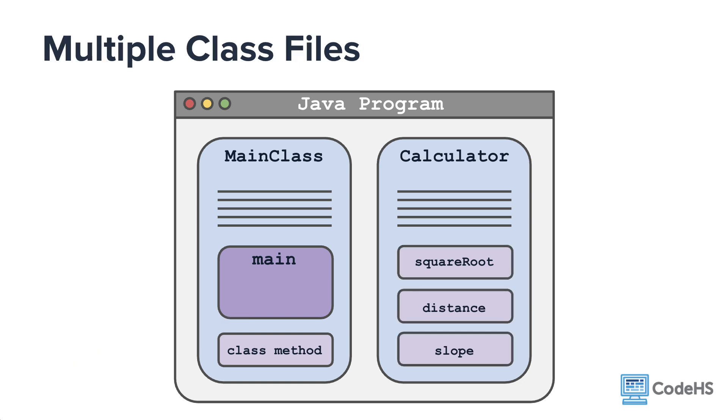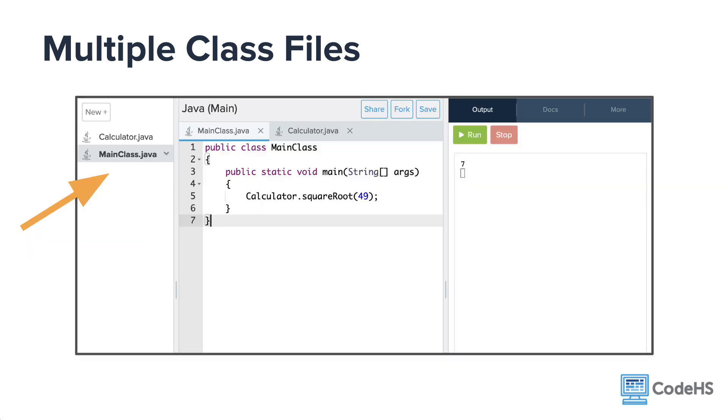One thing to note, now that you are becoming more familiar with defining and calling class methods, you'll start to see more programs that organize the code into multiple classes. Each is stored in its own Java file. In the CodeHS IDE, the left-hand column will contain the list of files and classes in your program. The file that is bolded will contain the class that has the main method in it, which will execute automatically when the program is run.